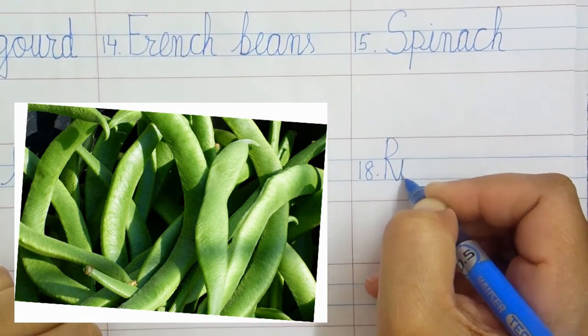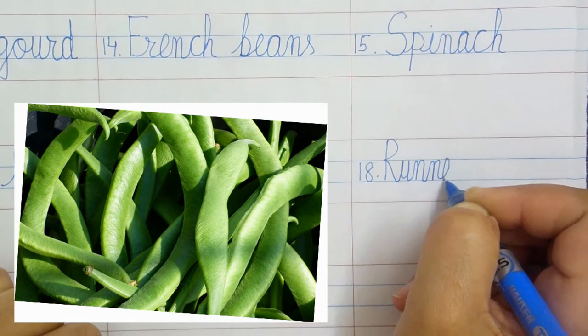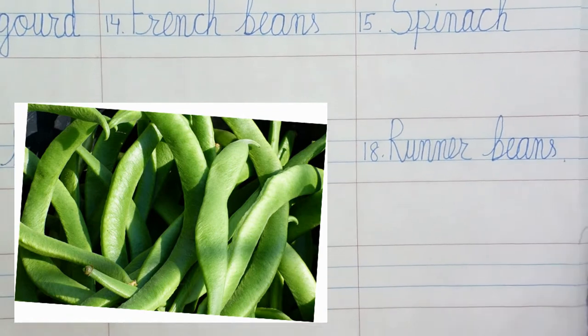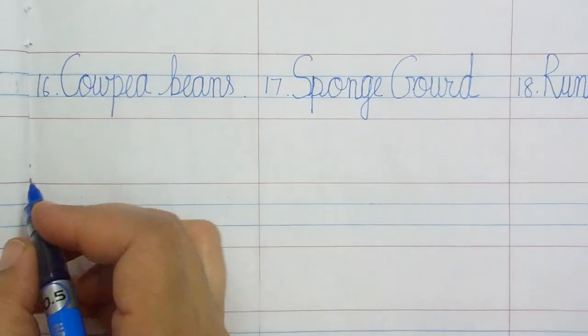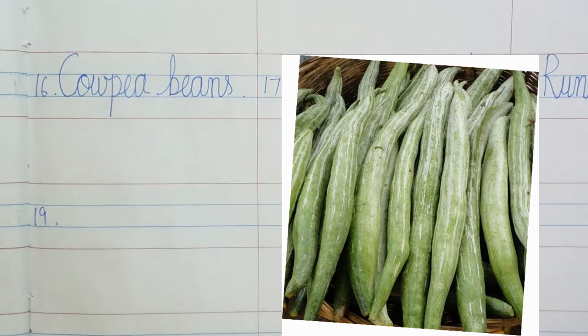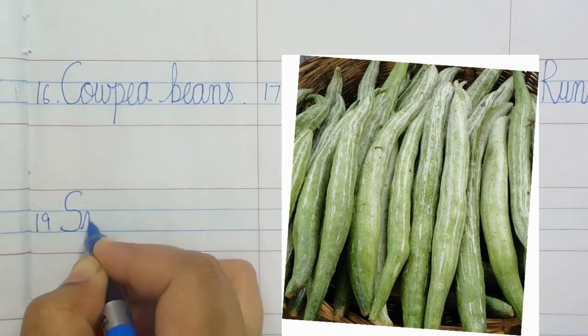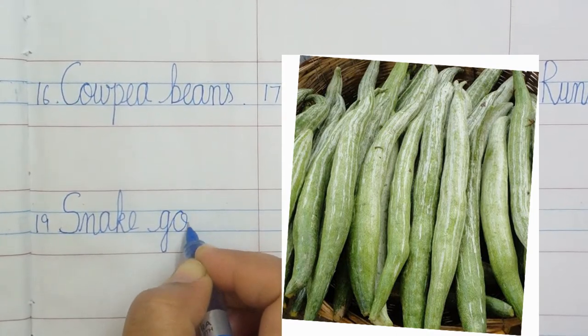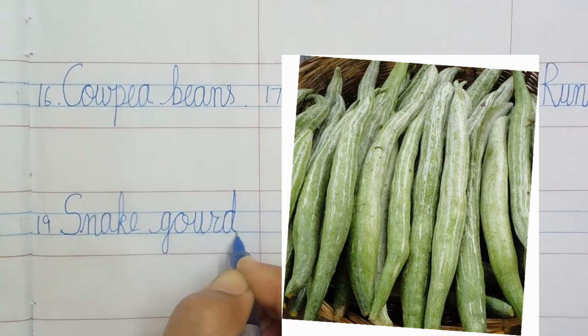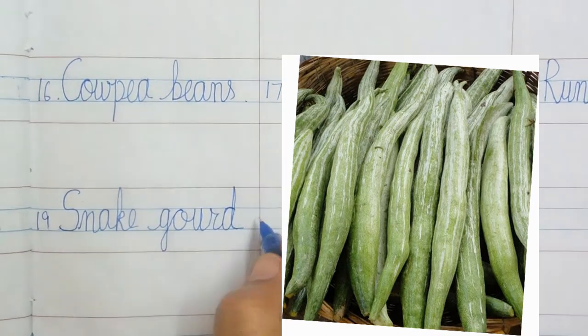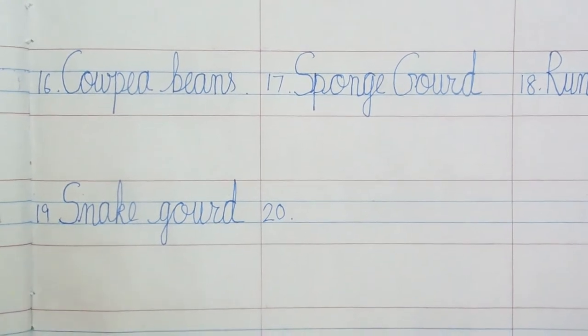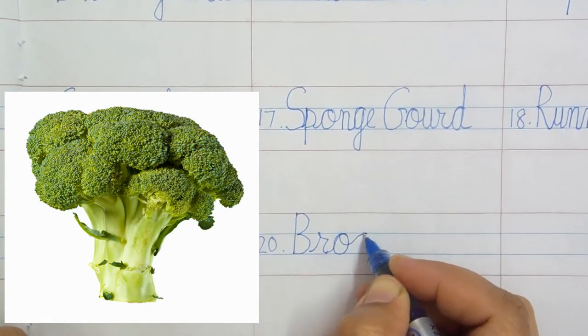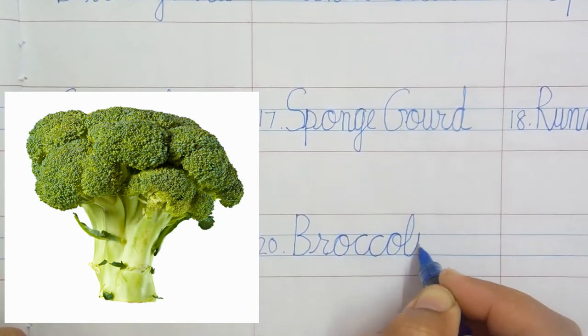Runner beans: R-U-double N-E-R B-E-A-N-S, runner beans. Snake gourd: S-N-A-K-E G-O-U-R-D, snake gourd. Broccoli: B-R-O-double C-O-L-I, broccoli.